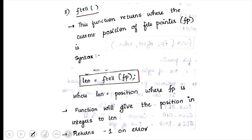ftell returns the current position of the file pointer as a long integer. The syntax is: length = ftell(fp);. If -1 is returned, it indicates an error. Otherwise, length gives the current byte position of the file pointer.